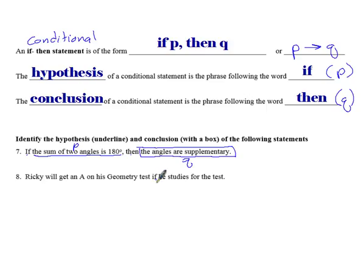Well, notice if is now the second part. So that means this is still my hypothesis. This is still P. If he studies for the test, and I could kind of sneak the word then up front here, then Ricky will get an A on his geometry tests. So that's one where it's sort of flipped a little bit.